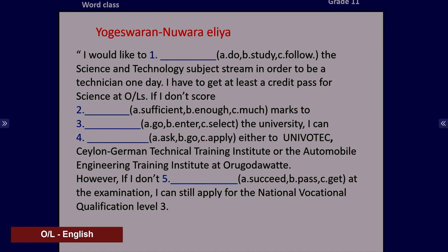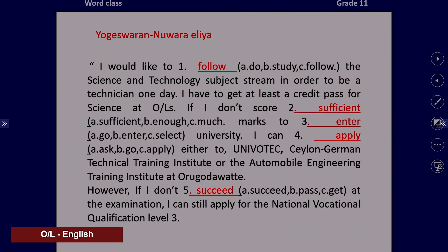Let's check the answers. I would like to follow the science and technology subject stream — when we talk about a subject or subject stream, we use the word follow; native speakers also use take, as in take a course or we take literature. If I don't score sufficient marks — sufficient means you have something adequate; we don't say enough marks here as enough implies you have all that you need. Enter the university — we enter the university. I can apply to Univotech — we apply for a post or apply to an institution. The last blank: succeed at the examination — we use pass with examination, but here with the preposition at, we say succeed at the examination.